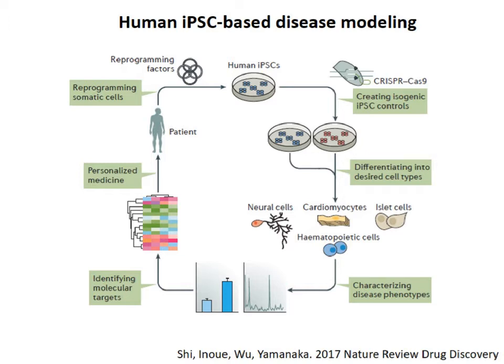These cells can be genetically engineered to create isogenic controls that have everything else the same except the gene of interest. Both parental and isogenic iPSCs can be differentiated into desired cell types such as neural cells, cardiomyocytes, or hematopoietic cells. Those cells can be characterized for disease phenotypes and subjected to omic analysis such as RNA-seq to identify molecular targets, which can then be used to develop personalized medicine for individual patients.